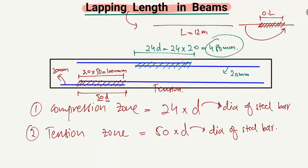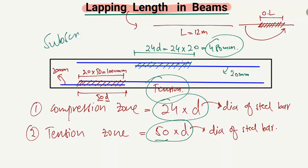In summary, for the tension region the formula is 50 × D, and for the compression region it is 24 × D. This is the overlapping length of the steel bar in the beams. Hope you guys understand, and don't forget to subscribe to our channel for daily Seven Engineering videos. Thank you for watching.